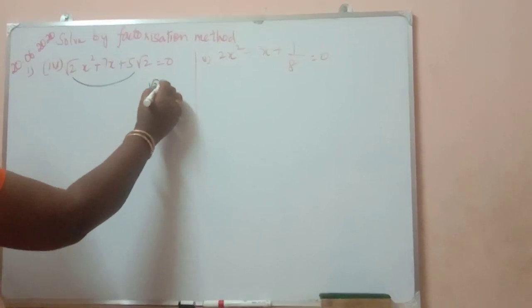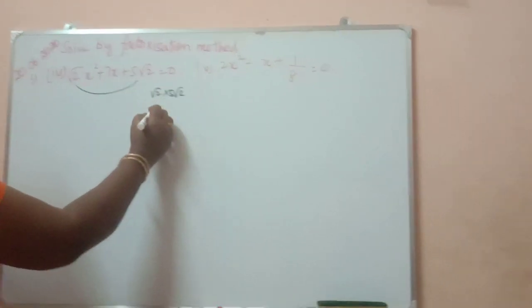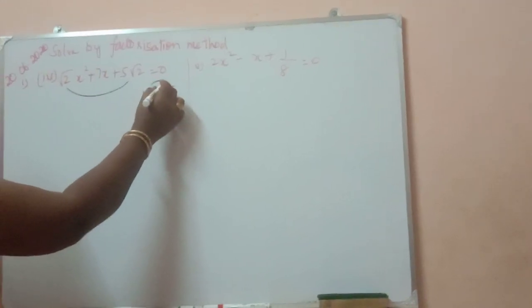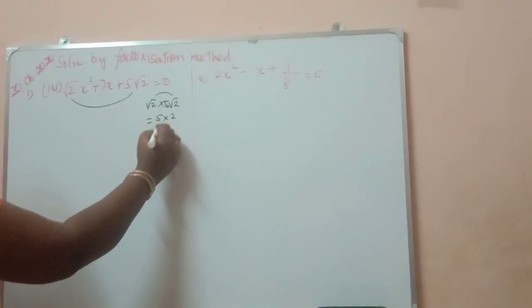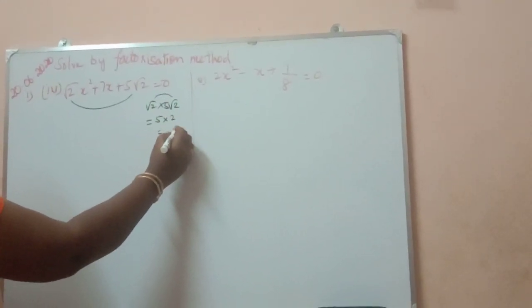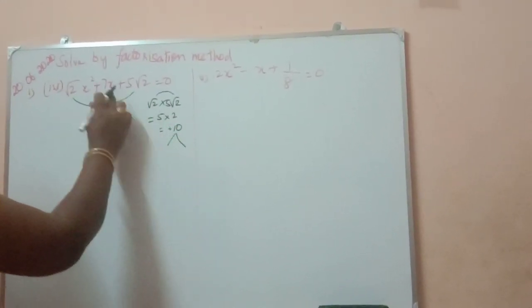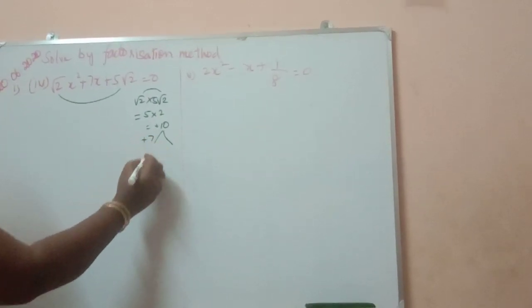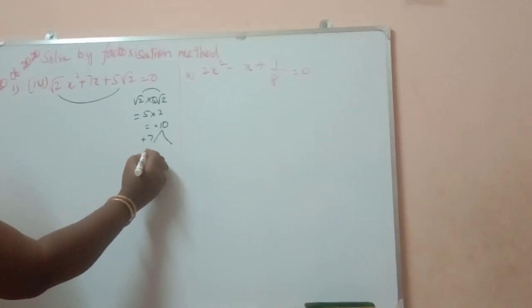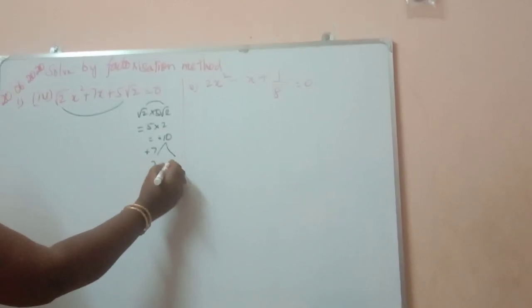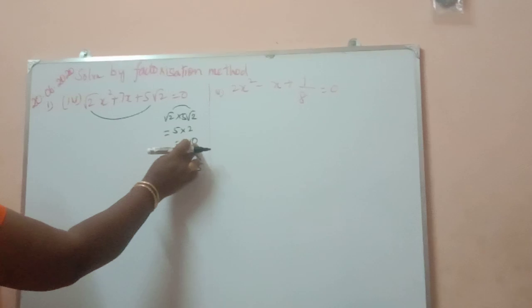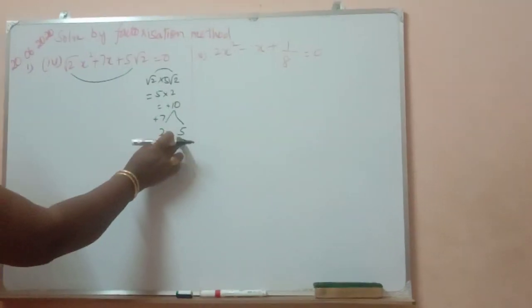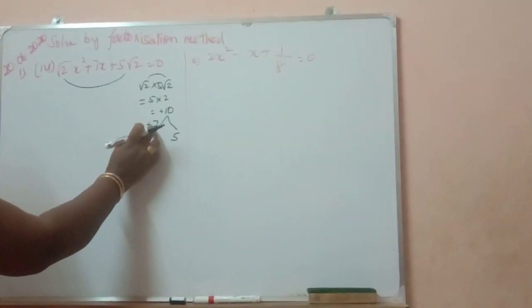Root 2 into 5 root. 5 into root 2 into root 2. So, we want plus 10. 5 and a half is plus 7. So, 2 pi's are 10. If we add, we can get this number.